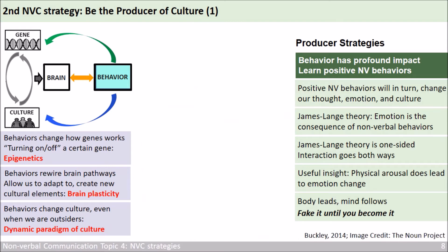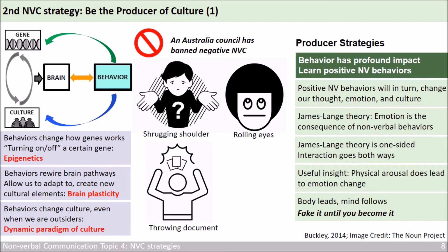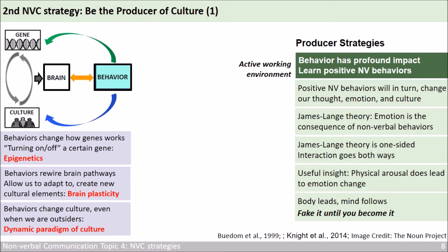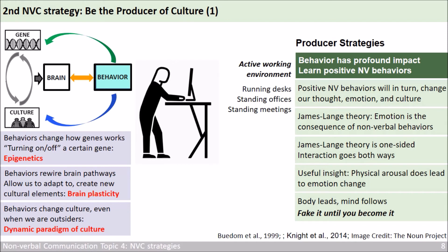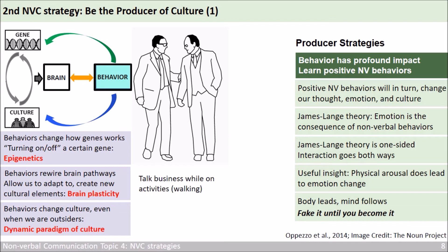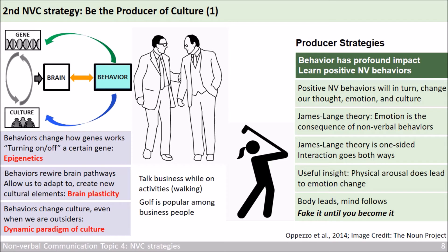Here are a few more studies that give us ideas of how to put this in real life. For example, an Australian council has banned negative nonverbal behaviors such as shrugging shoulders, rolling eyes, throwing documents, and slamming doors. Many organizations are now trying to create active working environments — we are seeing more and more running desks, standing offices, and standing meetings. This kind of working environment may save organizations up to 34% of working time. Talking business while on an activity such as walking or jogging is also a good idea — and that's probably why golf is such a popular sport among business people.